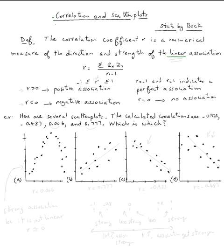So what else do we know? We know that the correlation is always between negative 1 and 1. R equal negative 1 and 1 indicates perfect association. Also, if r is positive, that means we have positive association. R is negative, we have negative association. R equals 0, we have no association.